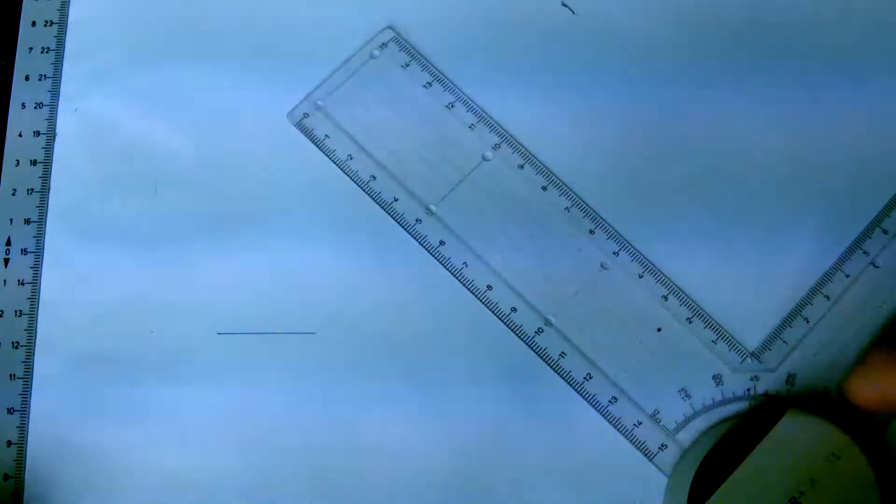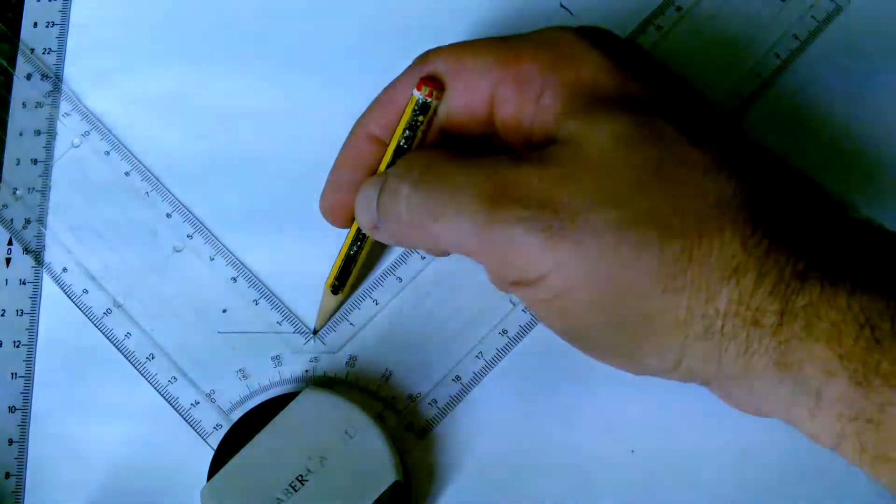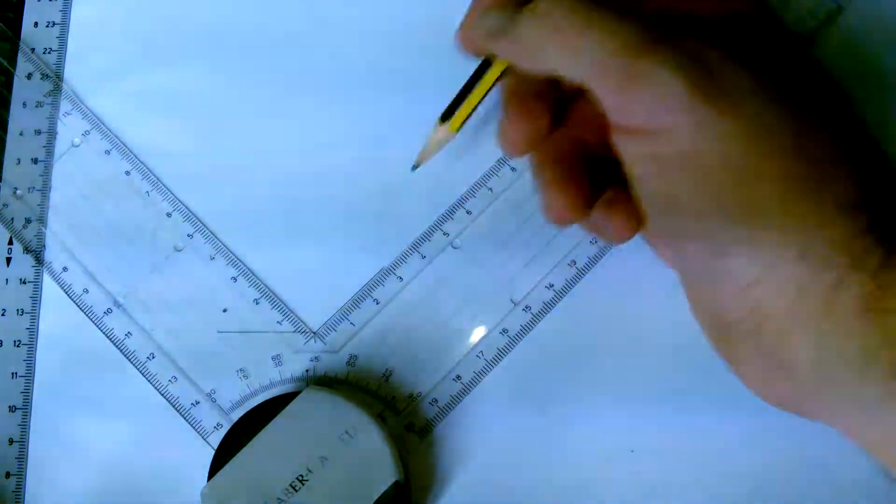Since the octagon has an exterior angle of 45 degrees, I'm going to set my set square to 45 degrees and draw another 30 millimeter line at 45 degrees.